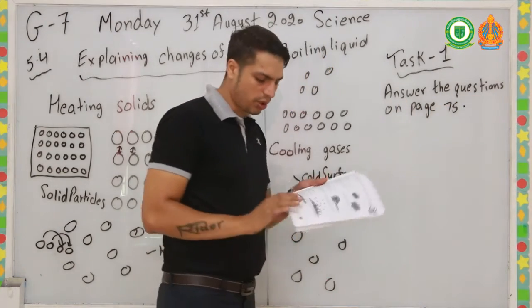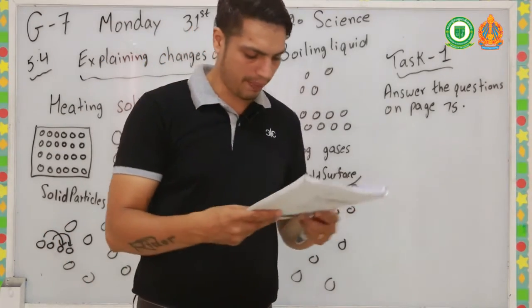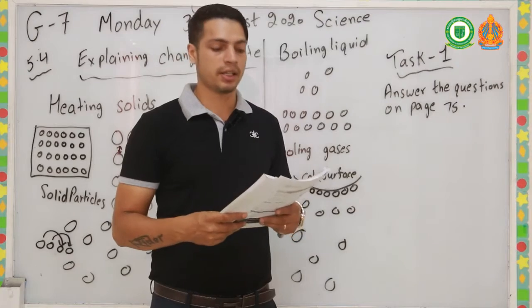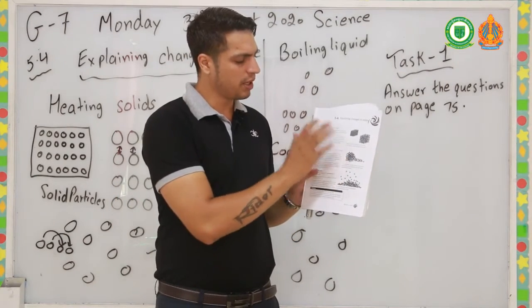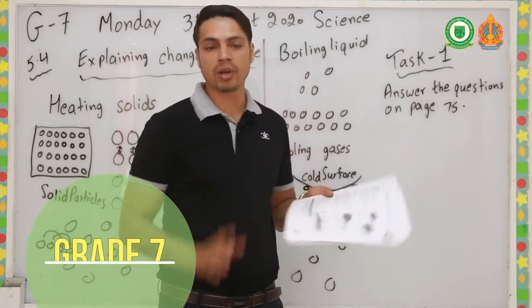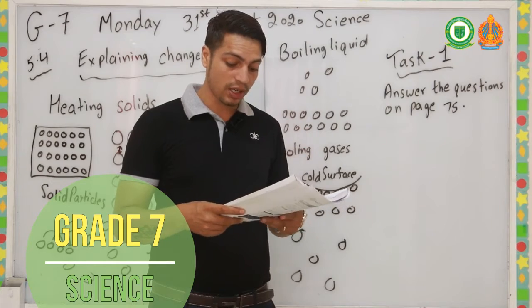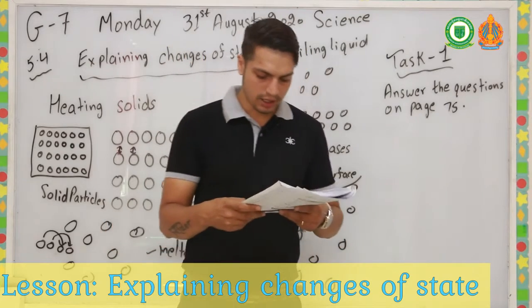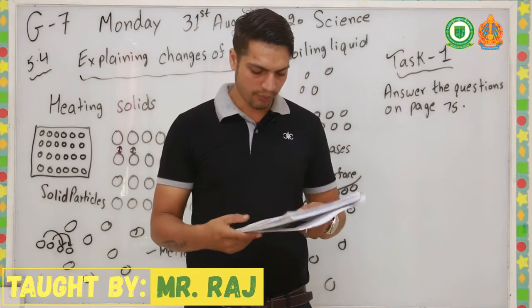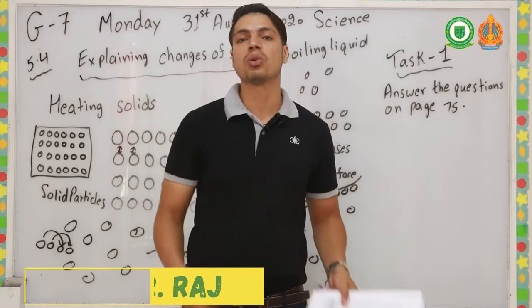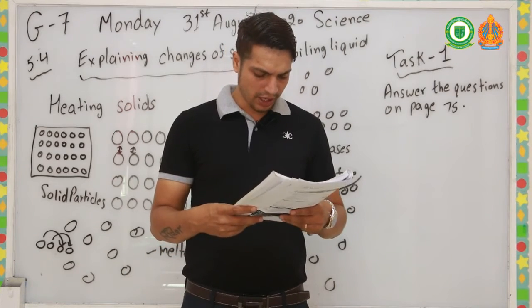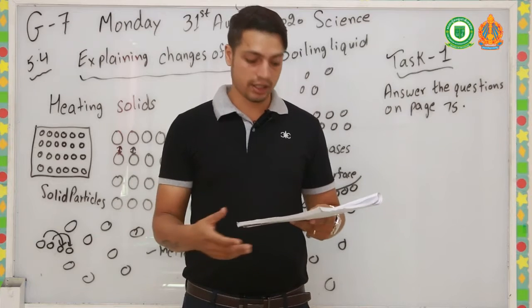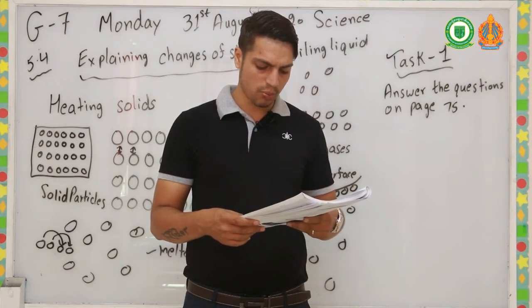Now for Task 1: answer the questions on page number 75. Describe the arrangement of particles in a solid — you can see that particles in solids are in a fixed pattern. What happens to the particles in a solid when they are heated? Watch this video carefully and you will know. What do the particles of a liquid do when they are heated?